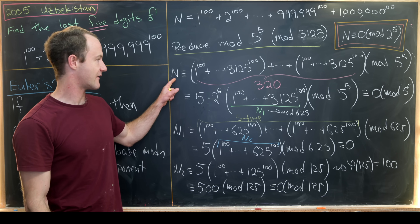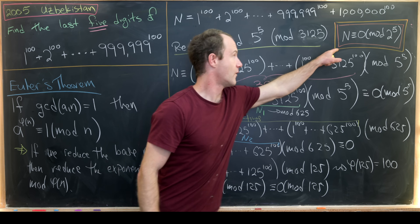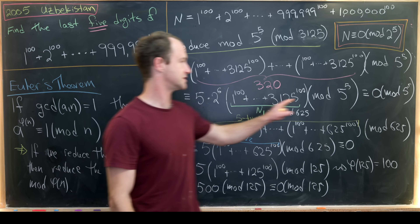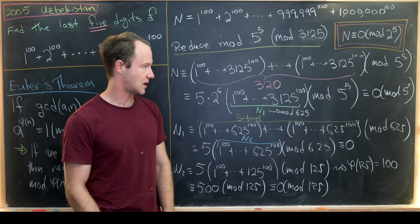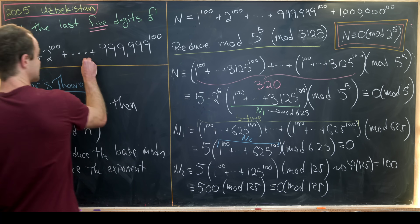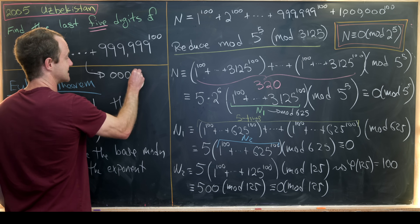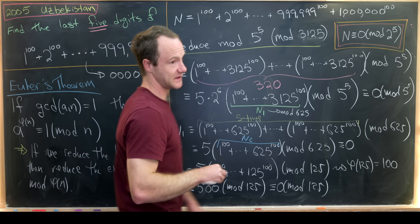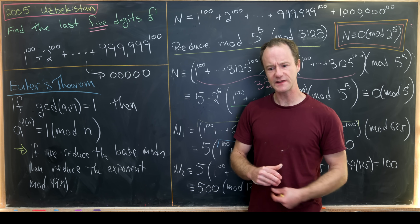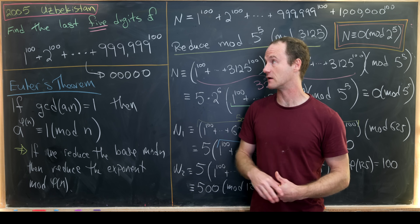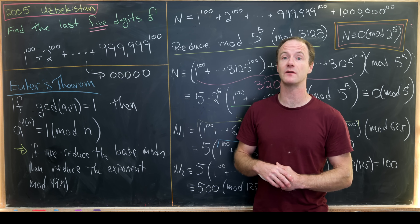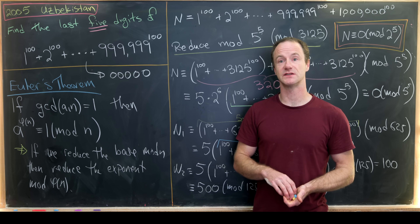So our number N is congruent to 0 mod 2^5 and also 0 mod 5^5, which means it's congruent to 0 mod 10^5. That gives us our answer: the last five digits of the original sum are all zero — 00000. If you like this type of final-digit problem, there are other similar ones on the channel.